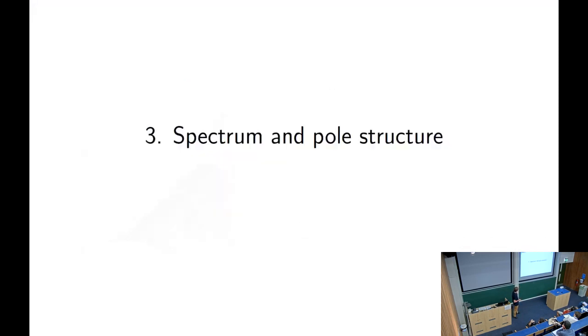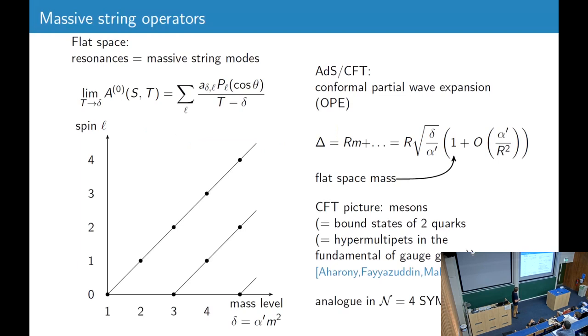Okay, so let's first talk about the pole structure. Like in flat space, we can extract the resonances by doing a partial wave expansion like this. And for the Veneziano amplitude, we get this spectrum here. So we have the mass levels, delta, plus the spin, and we get these linear Regge trajectories.